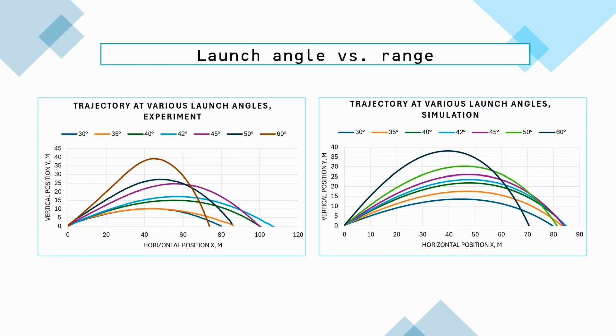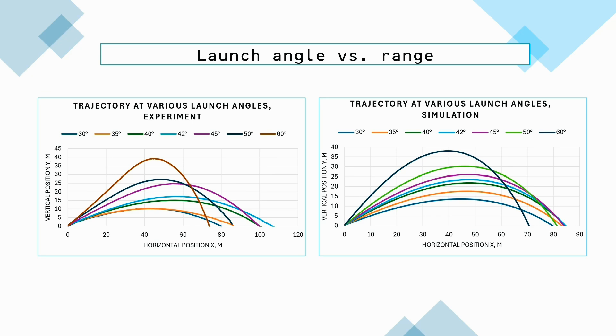Moreover, the greater contribution of the launch angle to the range is observed from the empirical findings, and at some angles the model tends to underestimate the rocket's range.